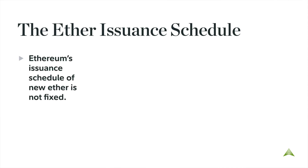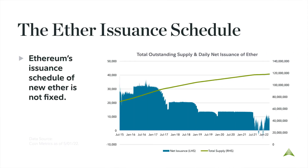Ethereum's issuance schedule of new Ether is not fixed, but rather follows a minimum viable issuance. Ethereum's future issuance schedule revolves around keeping validators incentivized to securely validate transactions on the network. As a result, the future issuance policy of Ether is largely unknown.